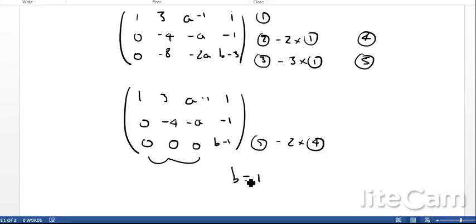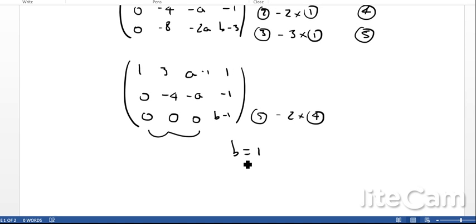If we have any other value for b, for example b is 2, then we'd end up with 0 equals 2 take away 1, which is 1. So 0 equals 1, which is inconsistent. There's obviously no solution unless we have b equals 1. When b equals 1, we end up with only two equations left. This is all zeros, so we end up with two equations but we've still got three unknowns. If we've got two equations and three unknowns, we'll have an intersection as a line rather than a point. So that's it. b equals 1 is my solution.